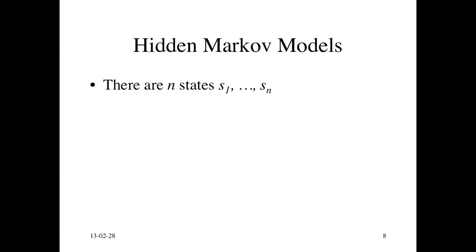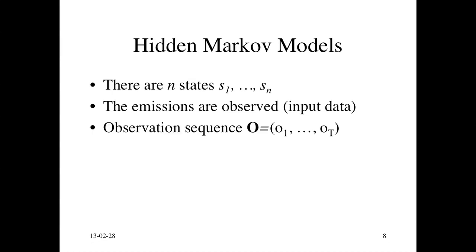To summarize, in a hidden Markov model, there are N states. The emissions are observed. The observation sequence is given to us as O1 through O sub capital T. And there's a state sequence, which to be very pedantic, it has to be sort of different from S1, because it's each X sub i is actually one of these N states.